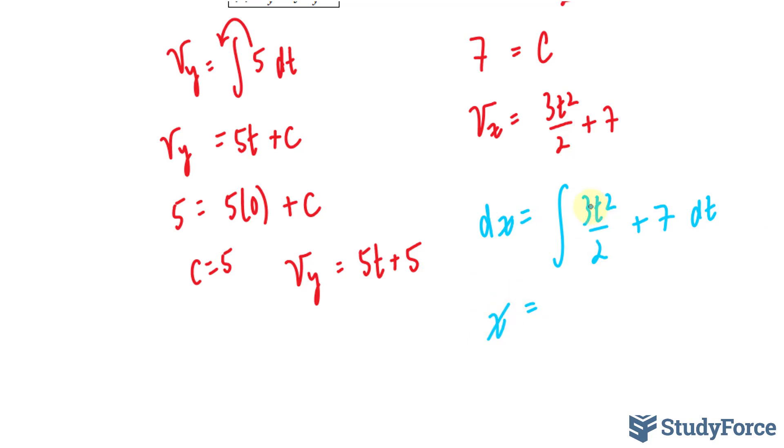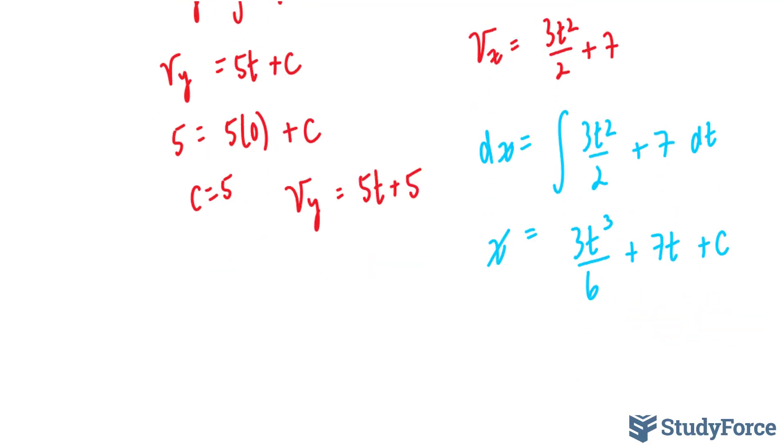The integral of 3t squared over 2, you add 1 to this and divide the whole thing by 3. This gives us 3t to the power of 3 over 6. This reduces down to half, and I'll do that in the next step, plus 7t plus c. I'll substitute t equals 0, and x equals 2 because of our point (2, 4) as defined in the question.